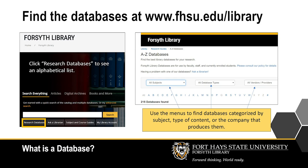Click Research Databases on the library's home page to see an A to Z list. Use the menus at the top to find the best databases for your subject. See all the databases which contain a certain type of content, such as ebooks or streaming video, or databases produced by a certain vendor.